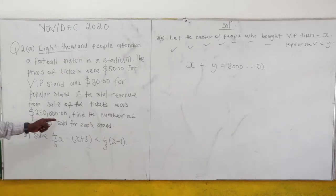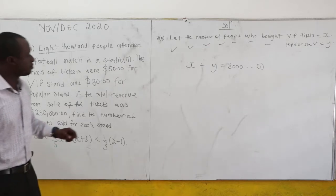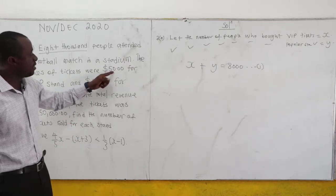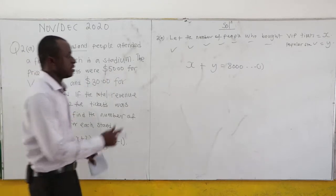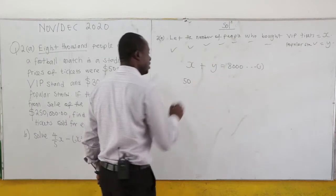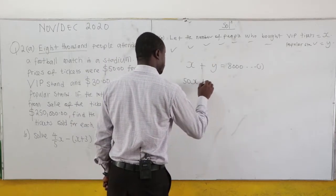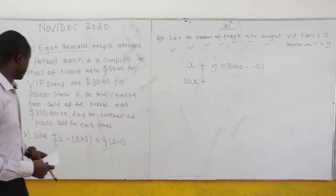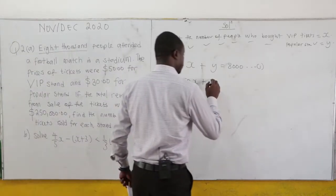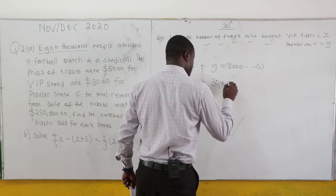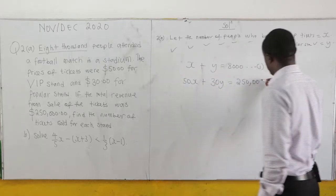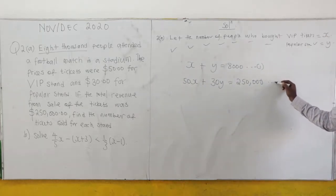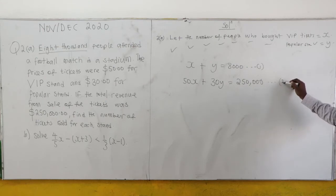Now, we're also given that the total revenue is $250,000. The price for the VIP is $50, so the total amount of money received from the sale of VIP stand tickets will be 50 times the number of people, which is X. And the revenue from the popular stand is 30Y, so the total is 50X + 30Y = 250,000. This is equation 2.